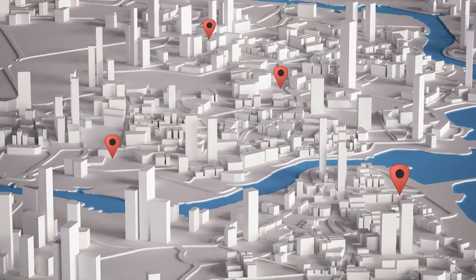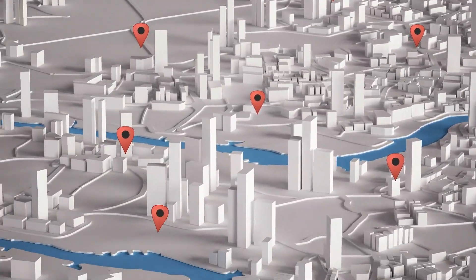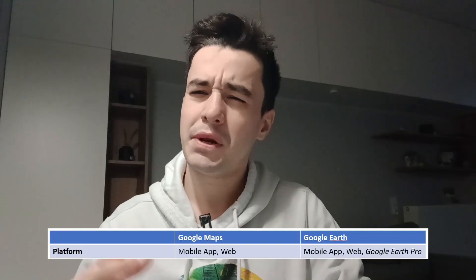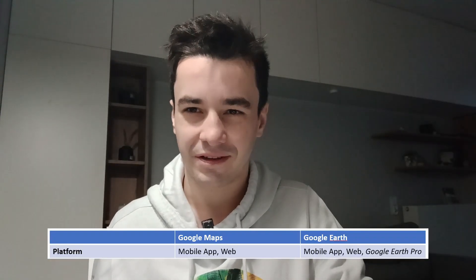Google Maps can be used in two ways: via a mobile app or on the web. Google Earth, on the other hand, has three uses: a mobile app, the web, and a desktop application called Google Earth Pro. We will come back to that. Let's compare apples to apples, starting with the web version.